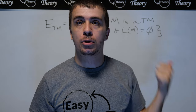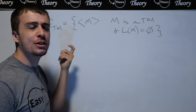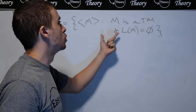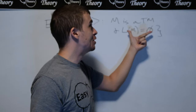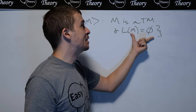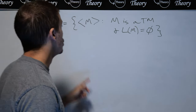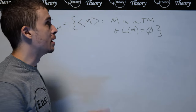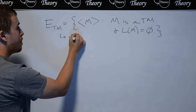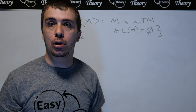I want to apply Rice's theorem to this language, which is called ETM — the emptiness for Turing machines problem. We have a set of descriptions of Turing machines such that M is a Turing machine and the language of that machine is empty. The ETM problem asks: given an arbitrary Turing machine, is it in this set? And famously, it's an undecidable problem, because we can reduce from the acceptance problem for Turing machines.